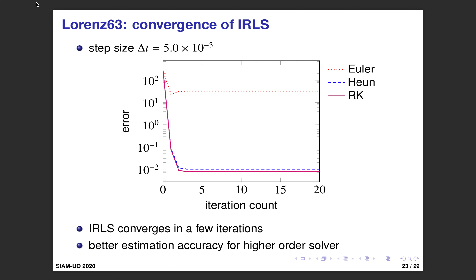We check the convergence of the proposed method. Because our method iteratively updates theta and sigma, we plot the convergence with respect to iteration count. Our method converges in a few iterations — like two or three. The estimation error by Euler method is a bit worse than Heun and Runge-Kutta, which is plausible since Euler has the worst accuracy. Higher-order ODE solvers give better estimation accuracy.